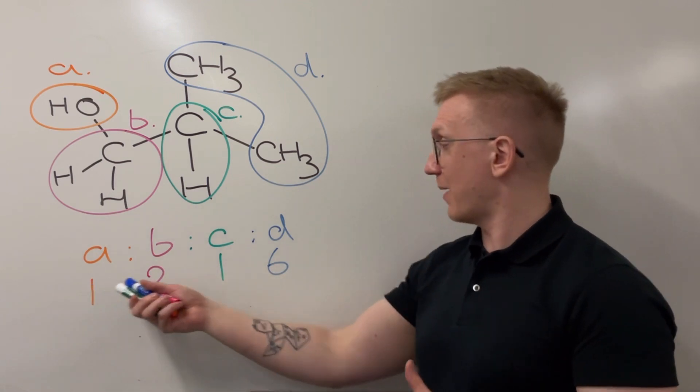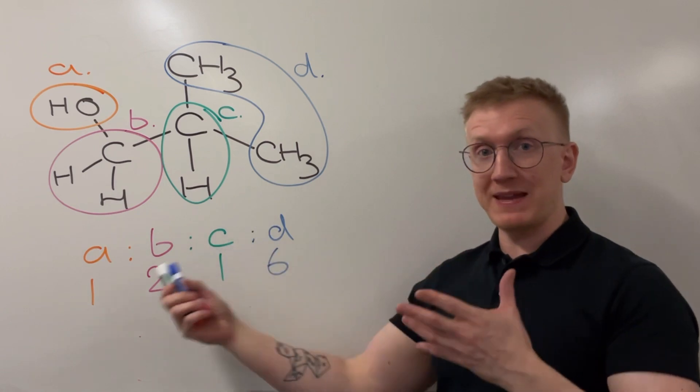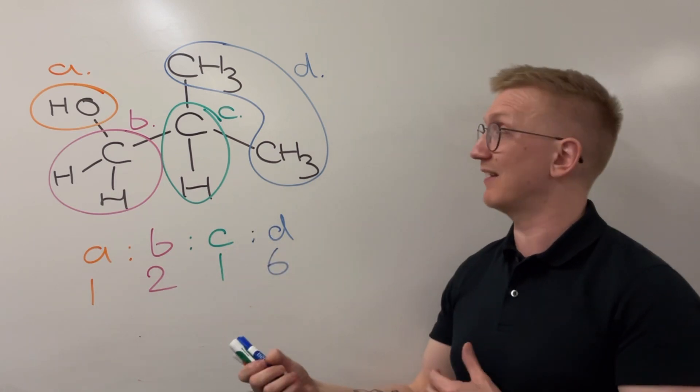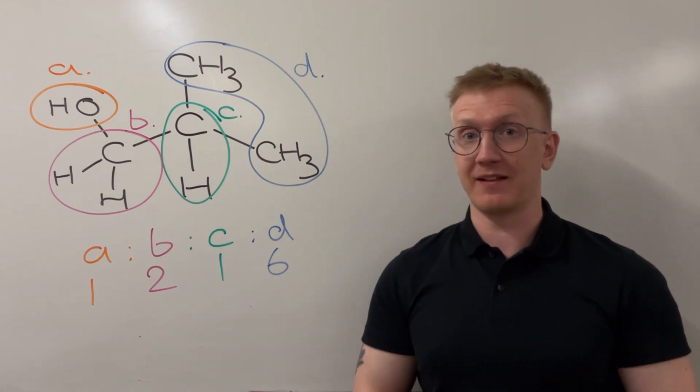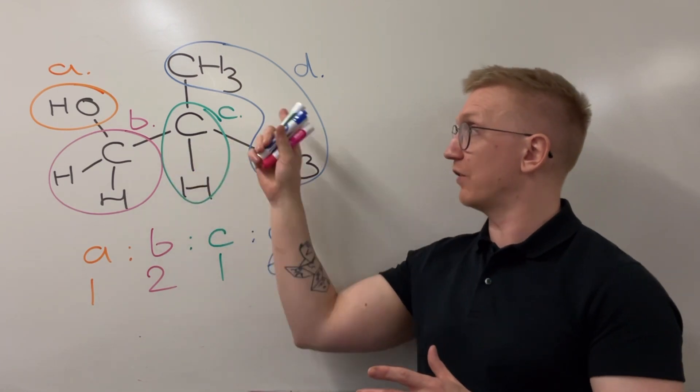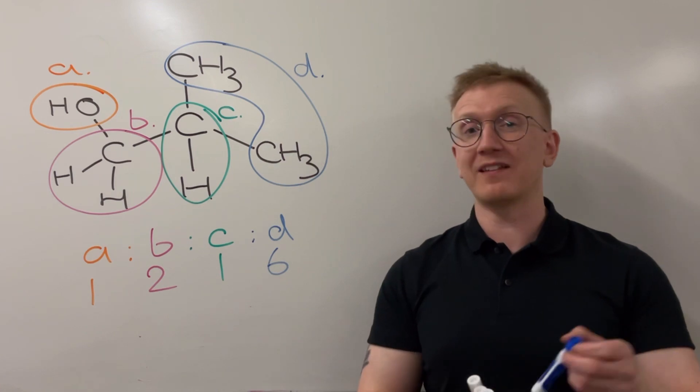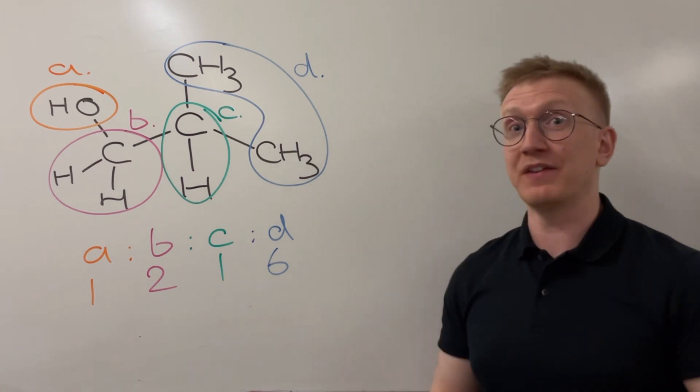Now what I need to do, since I've got my ratios of the peaks, my relative peak areas—these are often described as in exam questions—and I've got how many peaks I'm expecting, of course I now need to look at the splitting pattern. So I'm going to do this in reverse order this time, looking at the individual splitting patterns I'd expect to see.